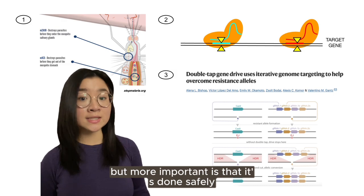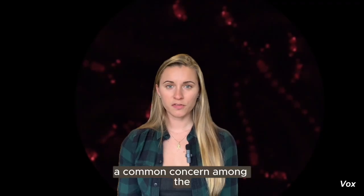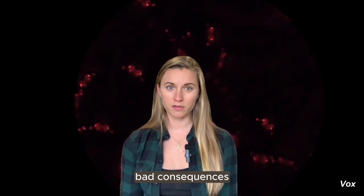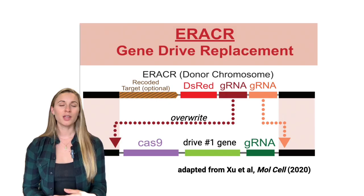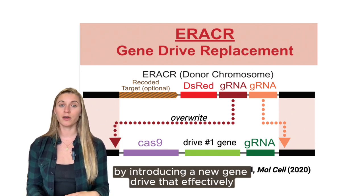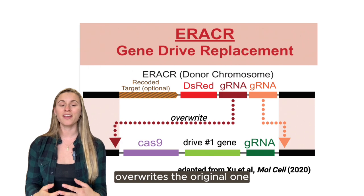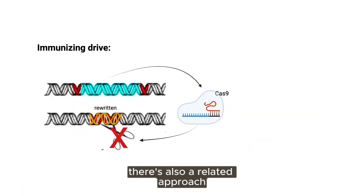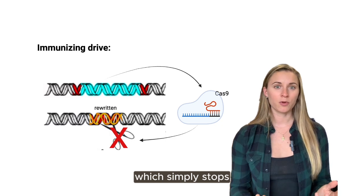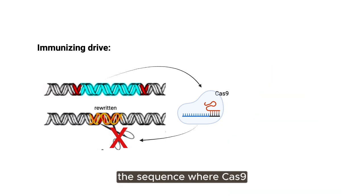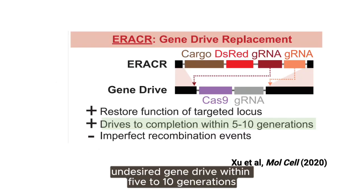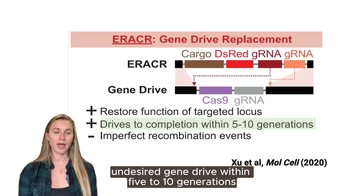But more important is that it's done safely. A common concern among the public is that a gene drive could have some unexpected bad consequences and there'd be no way to stop it. In response, researchers have designed strategies to reverse a drive's genetic modifications by introducing a new gene drive that effectively overwrites the original one. There's also a related approach called an immunizing drive, which simply stops the original drive in its tracks by rewriting the sequence where Cas9 would have cut. Both of these types of drives were able to stop an undesired gene drive within 5 to 10 generations in a lab setting.